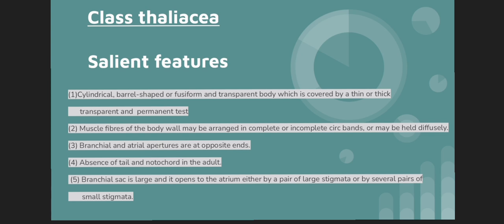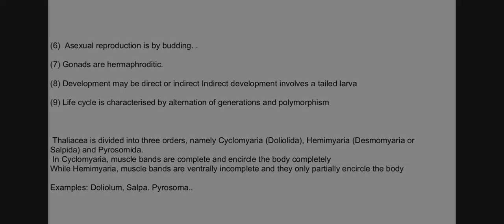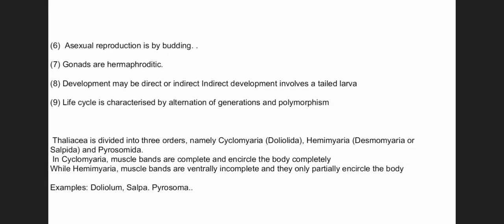The branchial sac is large and it opens to the atrium either by a pair of large stigmata or by several pairs of small stigmata. Asexual reproduction is by budding and gonads are hermaphroditic. Development may be direct or indirect, and indirect development involves a tailed larva.